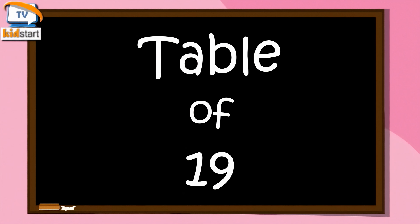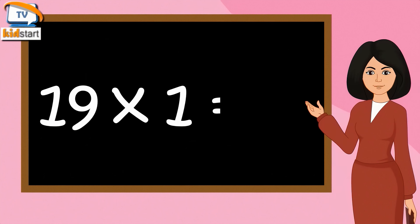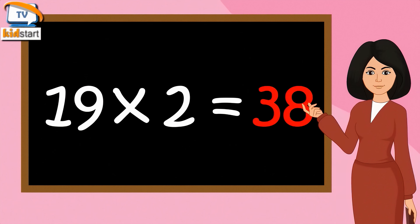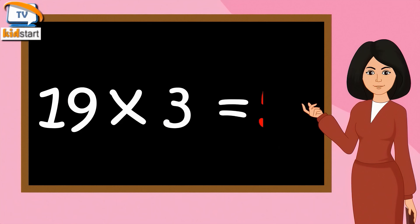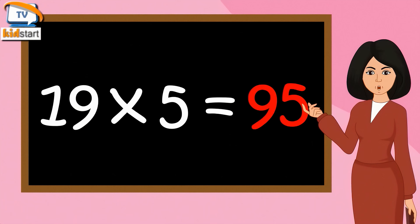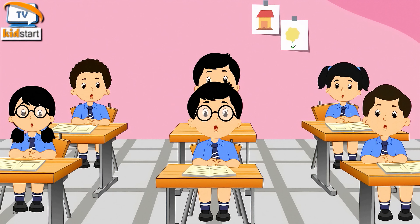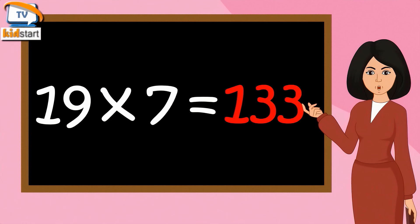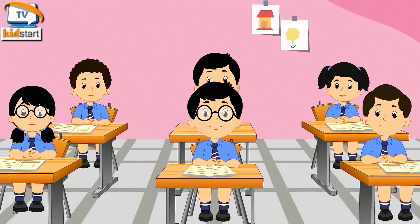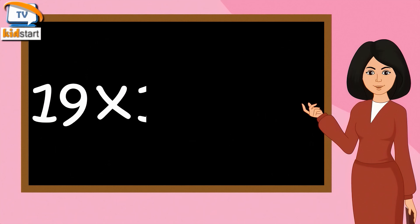Table of 19. 19 ones are 19. 19 twos are 38. 19 threes are 57. Nineteen fours are seventy-six. Nineteen fives are ninety-five. Nineteen sixes are one hundred fourteen. Nineteen sevens are one hundred thirty-three. Nineteen eights are one hundred fifty-two. Nineteen nines are one hundred seventy-one. Nineteen tens are one hundred ninety.